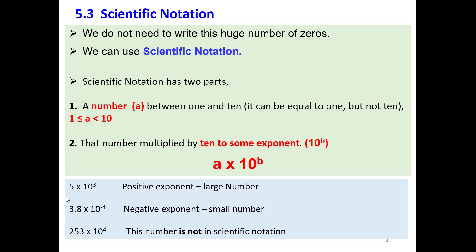Let's check the second number. Is this number in scientific notation? The answer is yes, because we have 3.8 in front, which is between 1 and 10, and it's multiplied by a power of 10. The exponent is negative 4. Always, if we have a number in scientific notation and the exponent is negative, this corresponds to a small number less than 1.